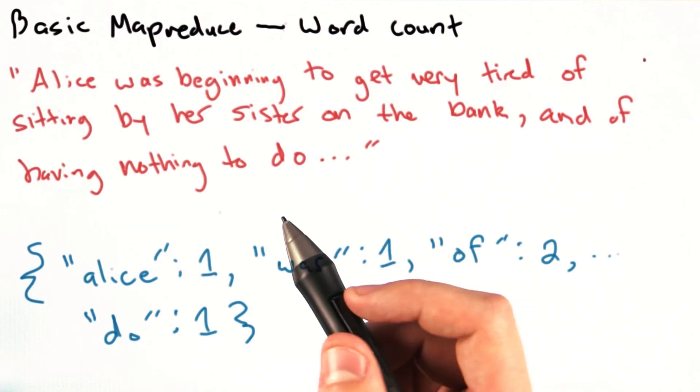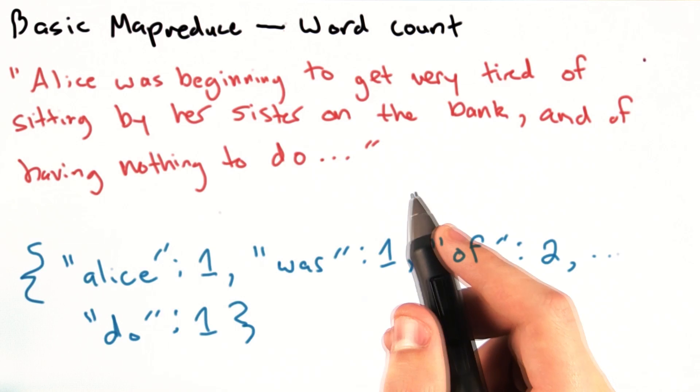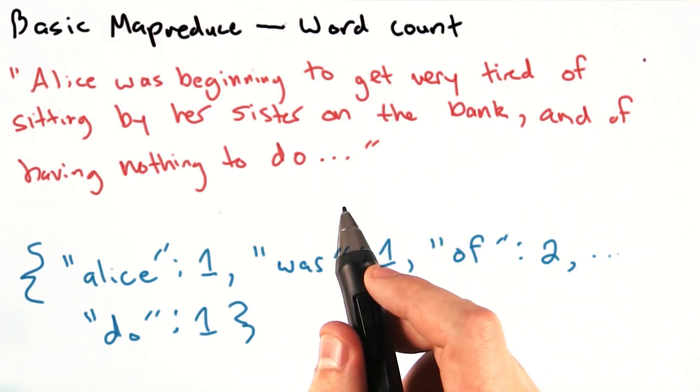And instead of applying it to this short sentence fragment from the book, we'd apply it to the entire book. Before we solve this problem with MapReduce,